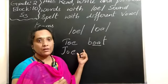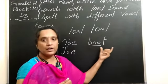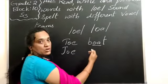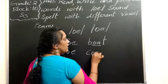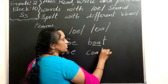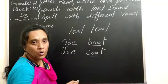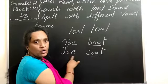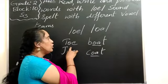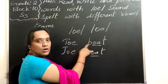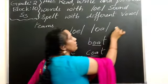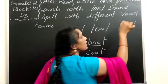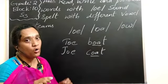Boat — B-O-A-T — gives the O sound. C-O-A-T, 'coat,' also gives the O sound. Joe, coat, to, boat — all giving the O sound. And also one more is the O-W, which also gives the long O vowel sound.